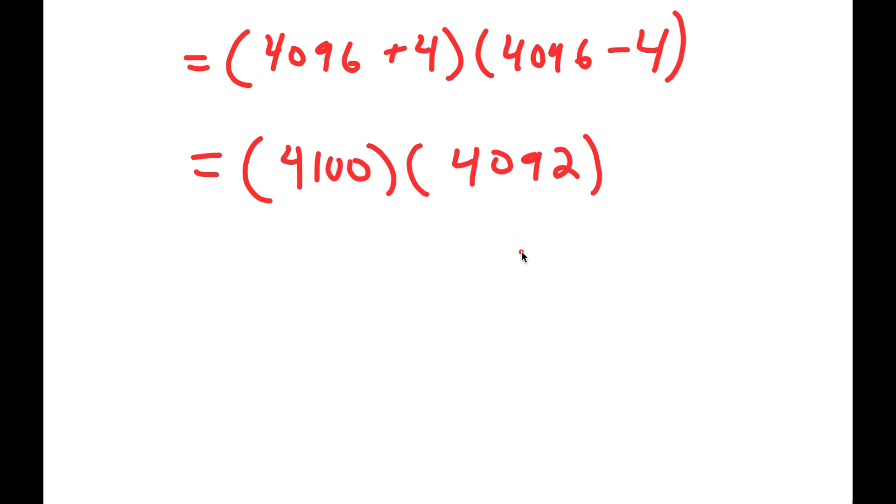And now we have to find a way to solve this without a calculator. Because the first method everyone would think of is just doing it normally, right? But this is wrong because it's going to take way too long and we need a more efficient method. So how are we going to multiply these two quickly? Well, what we can do is we write 4100 as 4000 plus 100, and we write 4092 as 4000 plus 92.